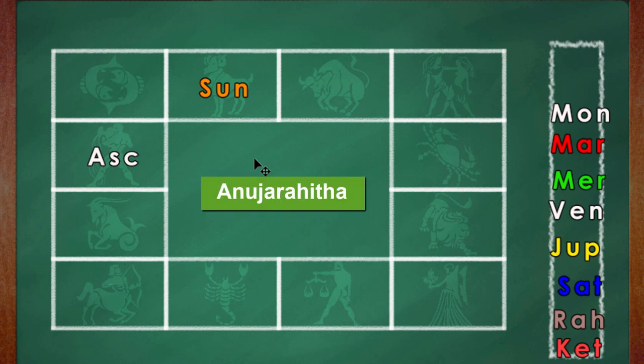Anuja Rahita, meaning Anuja means younger brothers or may include younger sisters. And Jeshtanashah, meaning his elder brothers will not survive. He doesn't say that you will not have an elder brother, but for some reason the person may not survive.